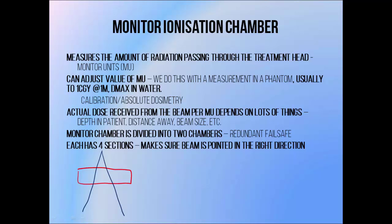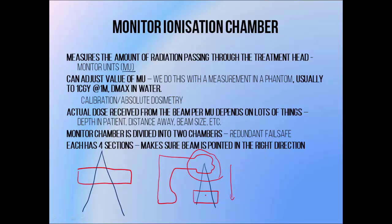The monitor chamber measures radiation in monitor units, or MU for short. When setting up a patient treatment, we might program a machine to deliver 100 monitor units. The monitor unit tells us how much radiation is coming out of the treatment head, but the amount of dose absorbed from this beam by a target depends upon a lot of things outside of the treatment head — for example, how far away it is from the radiation source since radiation drops off with distance, how deep inside the patient it is, and even the size of the beam used.